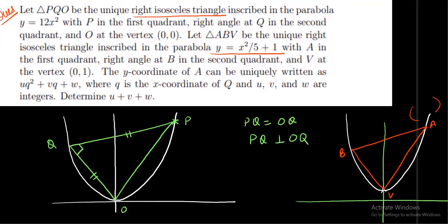What we need to find is the y-coordinate of vertex A of the right isosceles triangle. They say the y-coordinate of A can be uniquely written as uq² + vq + w, where q is the x-coordinate of Q. So Q has coordinates (q, 12q²). Here u, v, w are integers and we need to find the value of u + v + w.